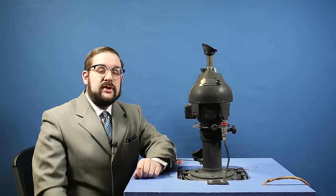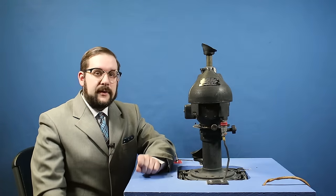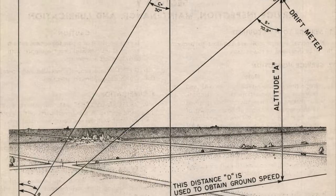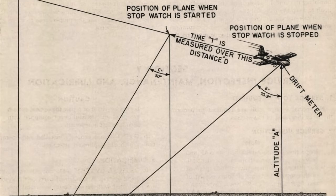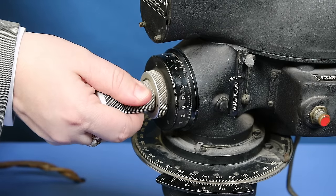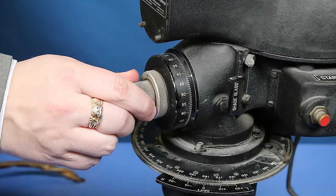The second procedure for determining your ground speed is a little bit more involved but gives far more direct results. This time rather than simply watching a reference object drift across your reticle you're instead going to track it using your index and your azimuth knobs to keep that object in the middle of the reticle. As you turn your index knob you're going to hear a click and this is a detent indicating that you have reached 50 degrees.